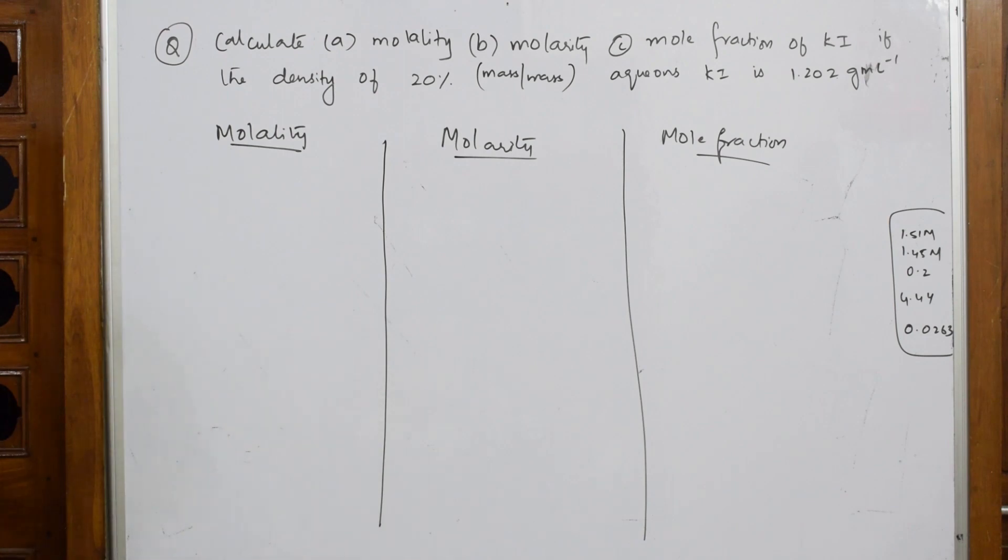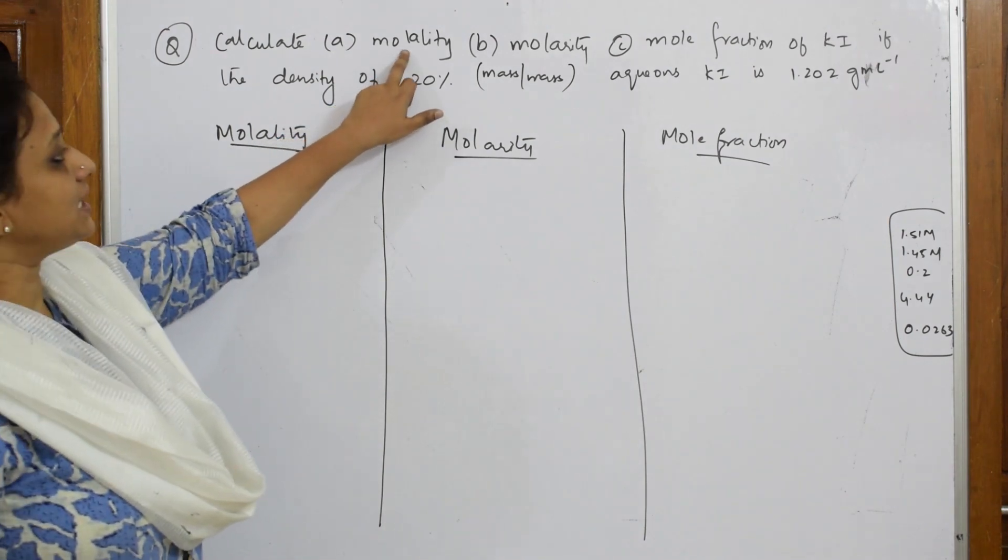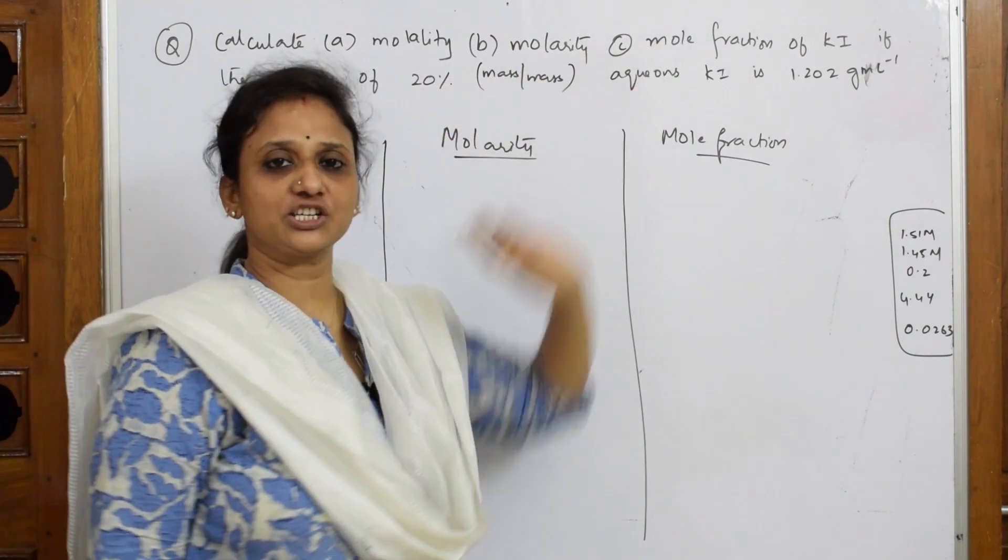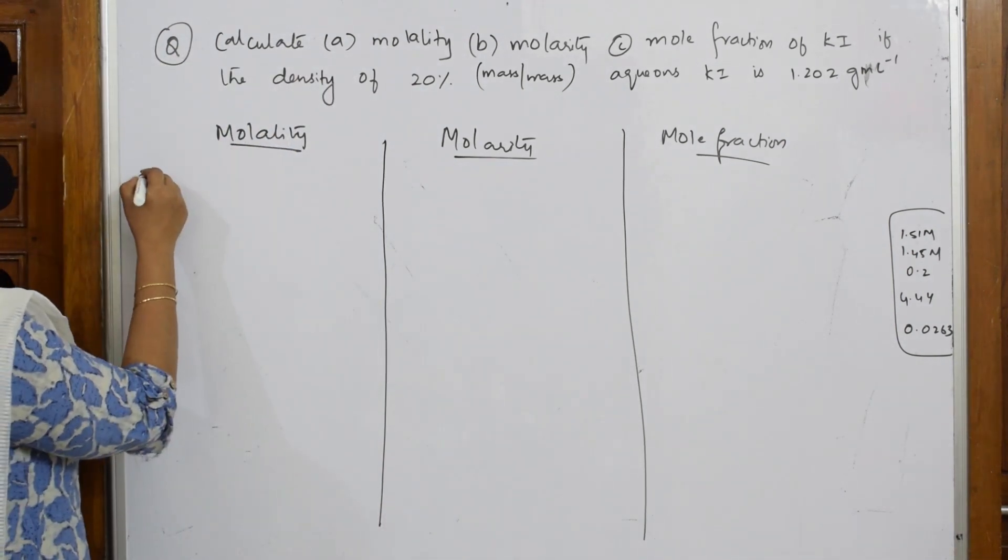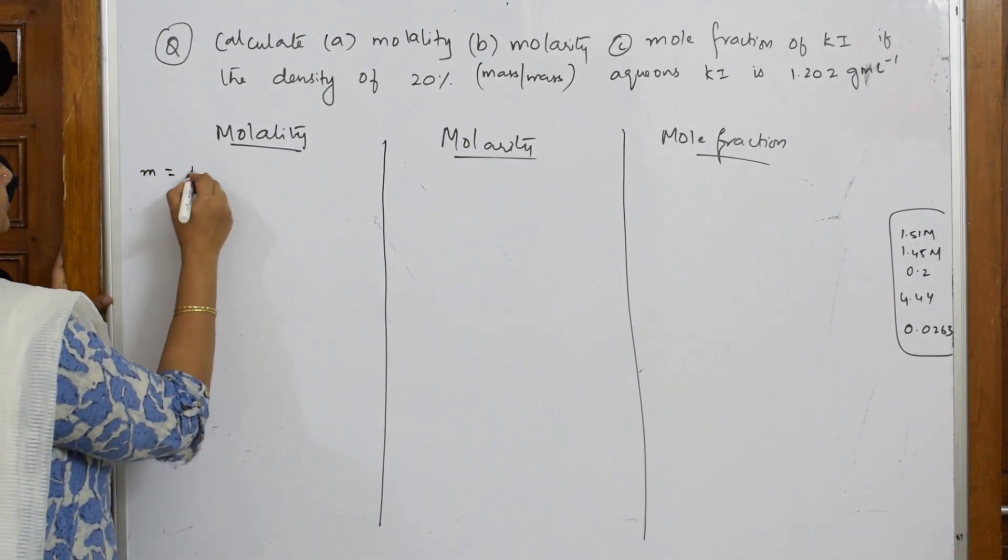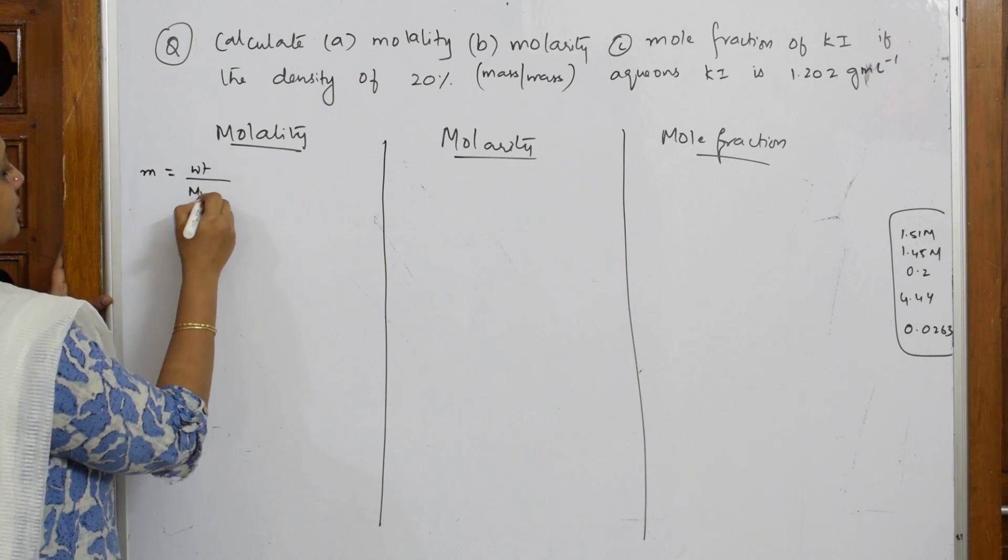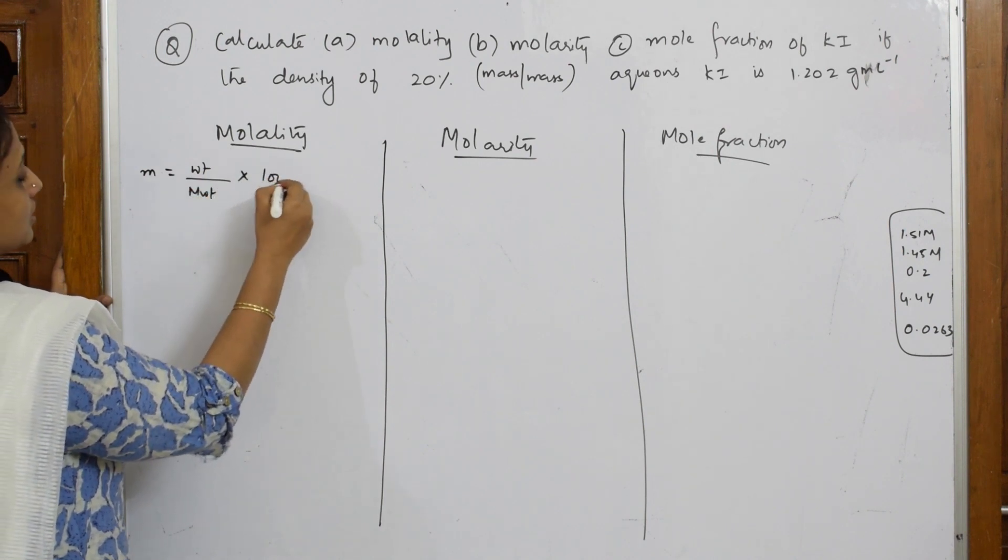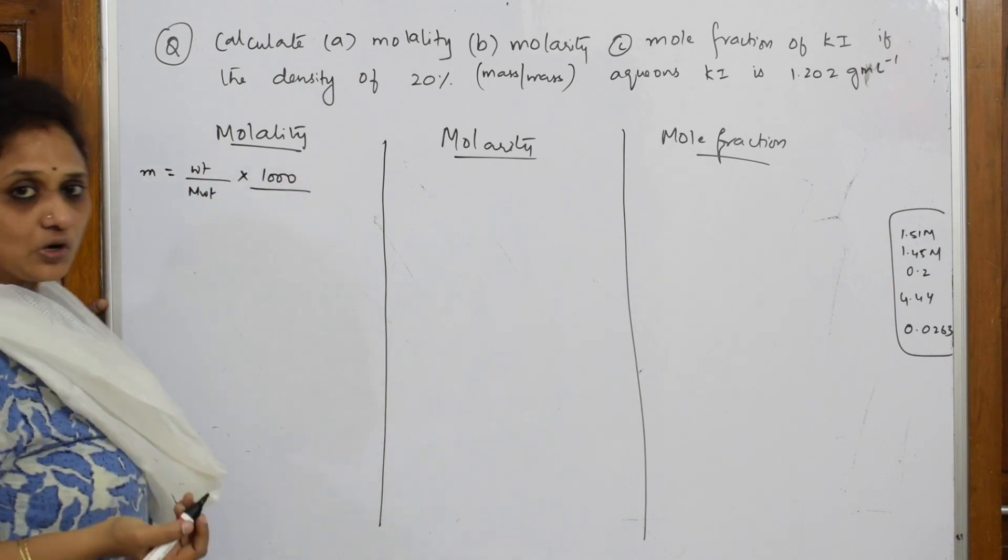For which one should I calculate? They have given me to calculate molality and mole fraction of potassium iodide. For molality, when I have to calculate, formula is weight by molecular weight into 1000 by weight of solvent.